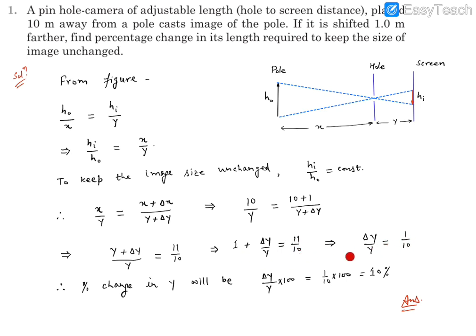So what will be the percentage change in y? Percentage change in y, that means the length between hole and screen, will be delta y by y times 100. You just multiply this by 100, so that comes out to 10 percent. So there will be 10 percent change in the distance between hole and screen. Now since this delta y came out to be positive, we say that the separation between the hole and the screen, that adjustable length, has to be increased, and increased by 10 percent.